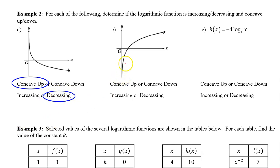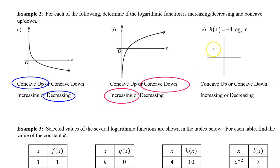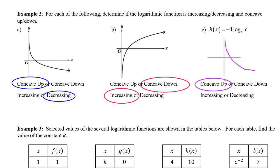Graph B is concave down — it is the left side of an umbrella shape. And from left to right, this curve is increasing; it is rising from left to right. So: concave down and increasing. For part C, we need to draw our own graph. When the a value is negative, the curve looks like this, and this will be concave up and decreasing, just like part A was.